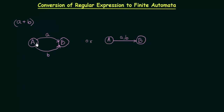The state, on getting either input A or input B, can go to the next state. You can also represent this using just one transition line instead of two — A on getting either input A or input B it can go to the next state B. Whenever you have an expression of this form, this is how you will design the finite automata for that.